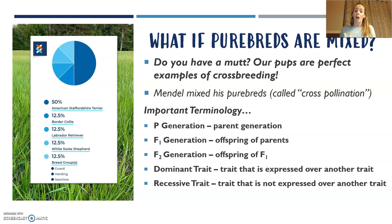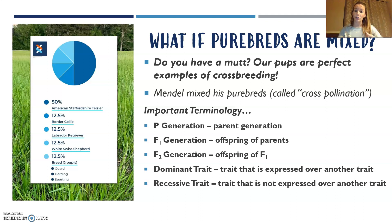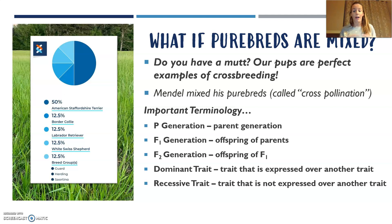When we talk about purebreds versus crossbreds or cross-pollination in plants, there's some terminology we need to cover. You're going to see P, F1, and F2 generations. If you imagine your grandparents as your P generation, the F1 is your parents, and F2 is you. Same thing with peas: the P generation is the initial parent generation, then you have their offspring, and to get F2, you cross two F1s.